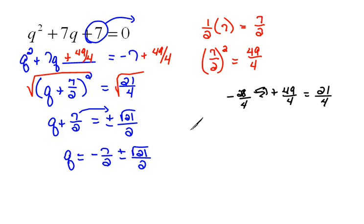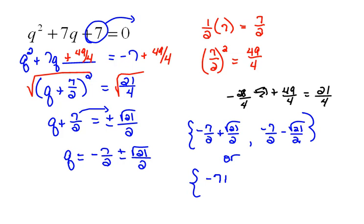Now again, this is two answers compactly written as one. So we need to write it as two answers. That would be negative 7 halves plus the square root of 21 over 2, and then also negative 7 halves minus the square root of 21 over 2. Now it can be written that way. Or we could also, since these have a common denominator already, write it as negative 7 plus the square root of 21 all over 2, and then also negative 7 minus the square root of 21 all over 2. Just depends, it's a preference really. Either one is the exact same answer.